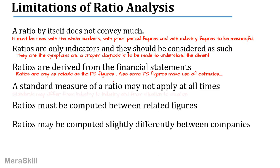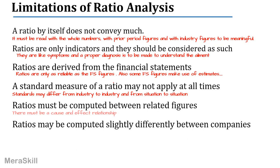We don't really have standard measures. Though we say the standard for a current ratio is 2, this could vary from situation to situation and from industry to industry. Ratios must be computed between related figures, because there is no point in having meaningless relationships — there has to be a cause-and-effect relationship. Ratios may also be computed slightly differently between companies, and there may be different definitions of the ratios, which makes comparisons less effective.